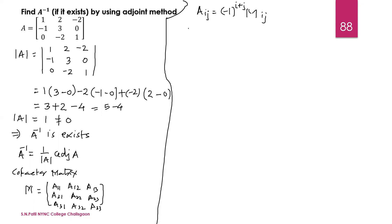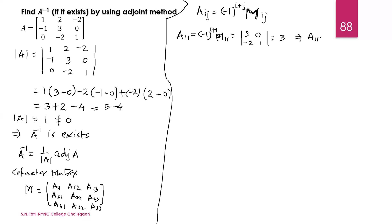Let us find the first cofactor A11. The sign is minus 1 raised to 1 plus 1, which is positive, into M11. M11 is the minor of the first element, obtained by deleting the first row and first column. The remaining submatrix is 3, 0, minus 2, 1. The determinant is 3 into 1 minus 0, which gives 3. So A11 equals 3.